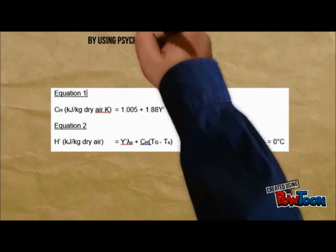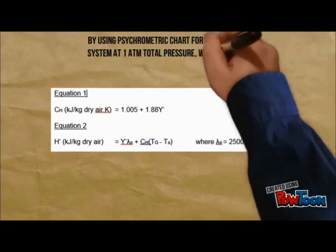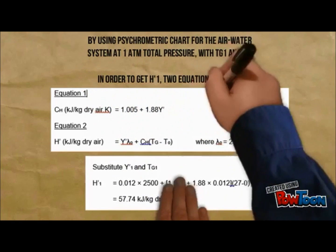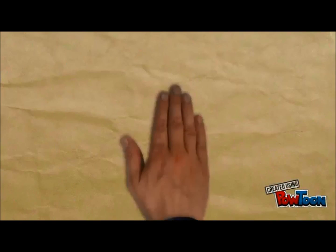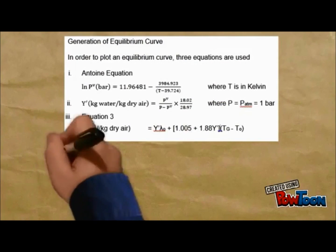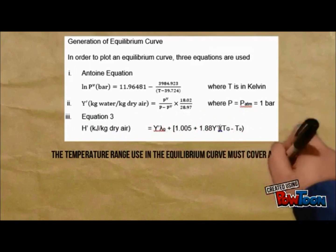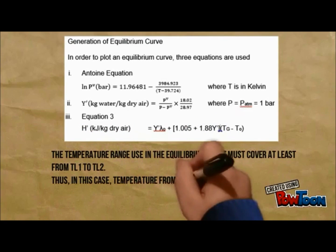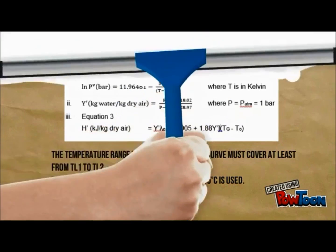Two equations could be used by actually using the psychometric chart for the air-water system at 1 atm total pressure, with Tg1 and Tw. In order for the generation of the equilibrium curve, we could use three equations: namely the Antoine equation, y', and equation 3. In this case, the temperature is ranging from 21 degrees Celsius to 55 degrees Celsius.